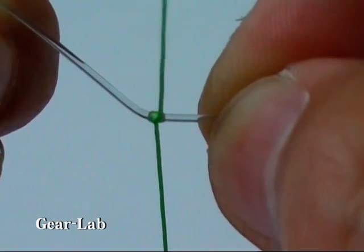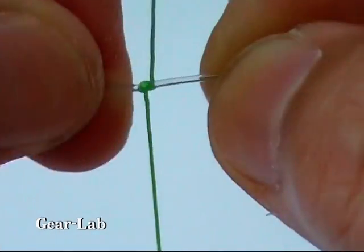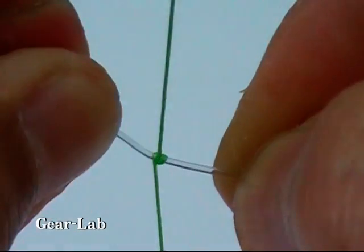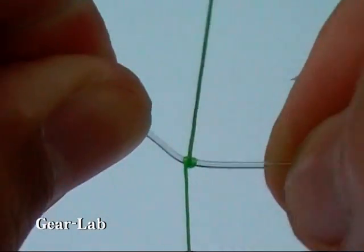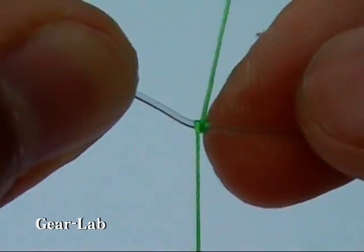Beginning in this way, proceed toward the bobbin. The knot should always progress to the right.